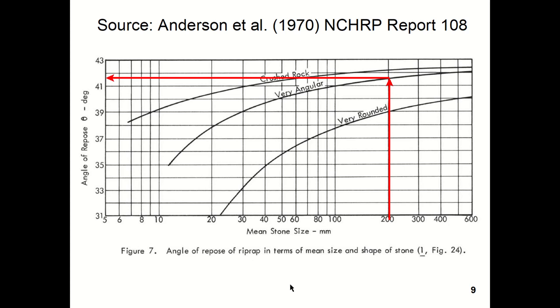And then I go horizontally over to the angle of repose for the riprap. And you see there's a different angle of repose based on if the riprap is crushed rock, very angular, or very rounded. The very rounded riprap is often found in the alluvial environments along the bank of the rivers.